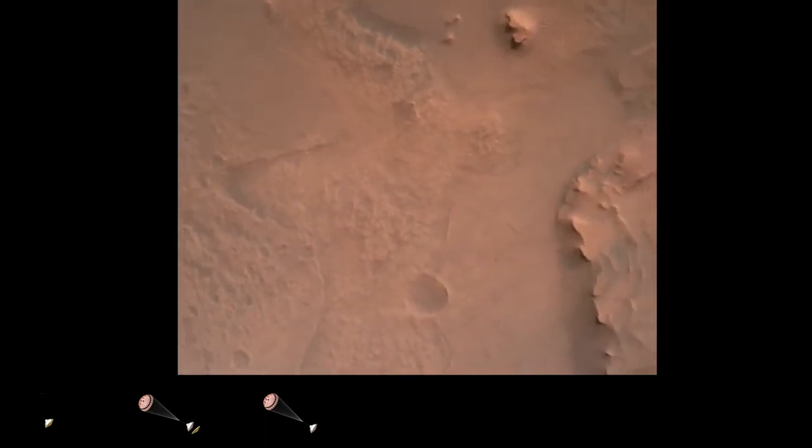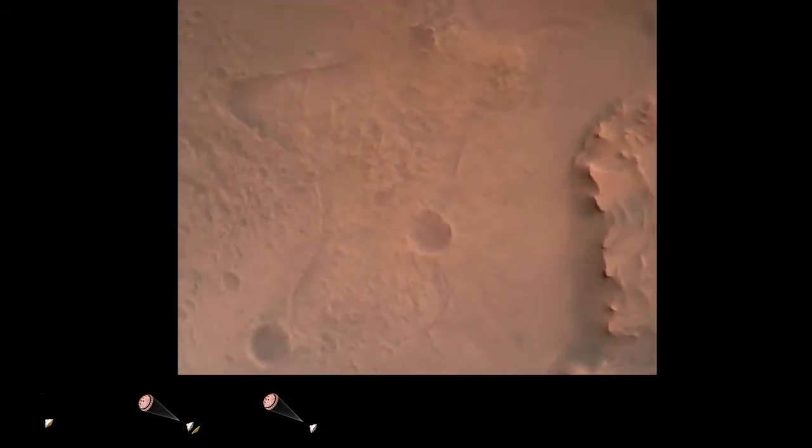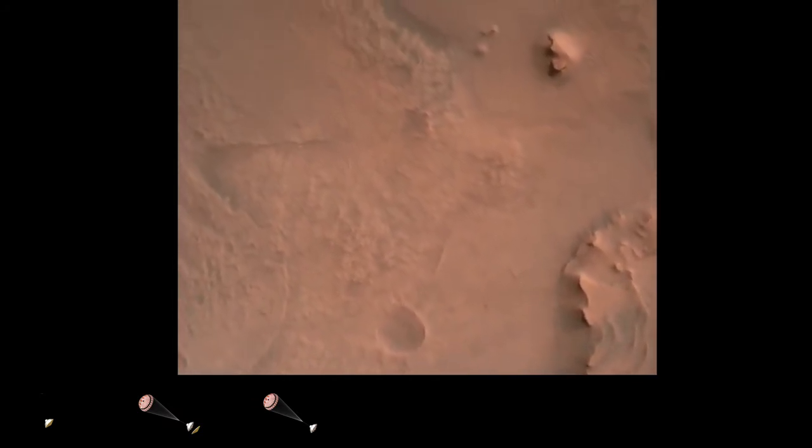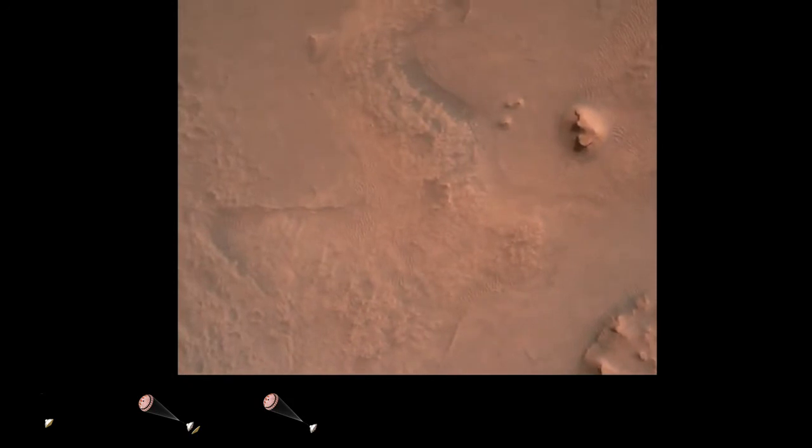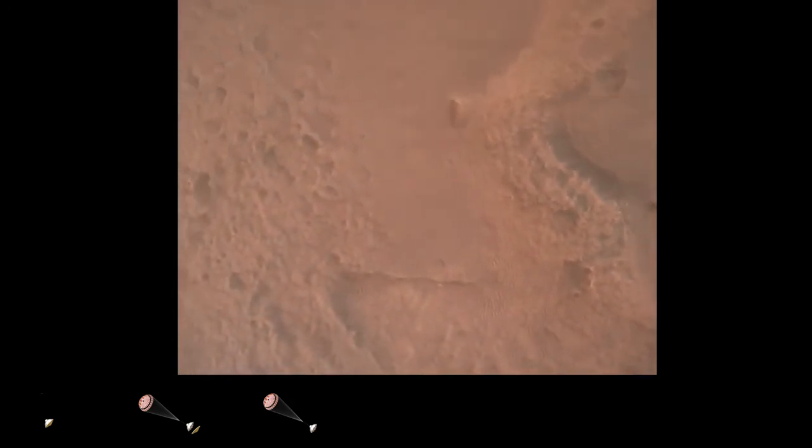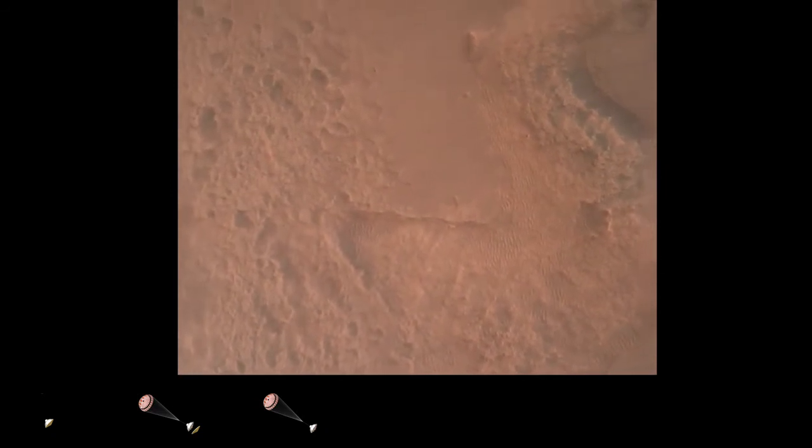Perseverance is continuing to descend on the parachute. We are coming upon the initialization of terrain relative navigation and, subsequently, the priming of the landing engines. Our current velocity is about 90 meters per second at an altitude of 4.2 kilometers.